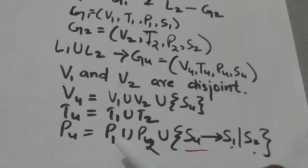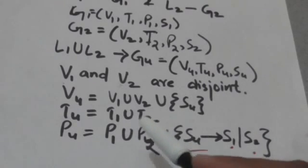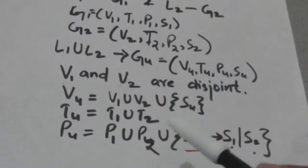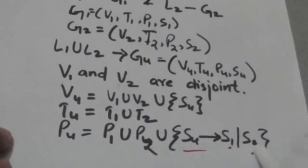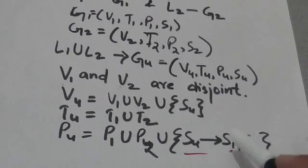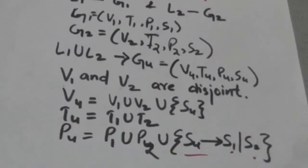PU will contain all productions of grammar G1 and G2, and also these productions: SU derives S1, and SU derives S2. This will be more clear after the following example.